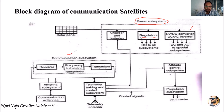From there, we have the communication subsystem, which also plays a major role. The main purpose of placing a satellite into orbital space is for communication. This communication subsystem uses several antennas — there is an antenna subsystem for the transmission and reception of signals.